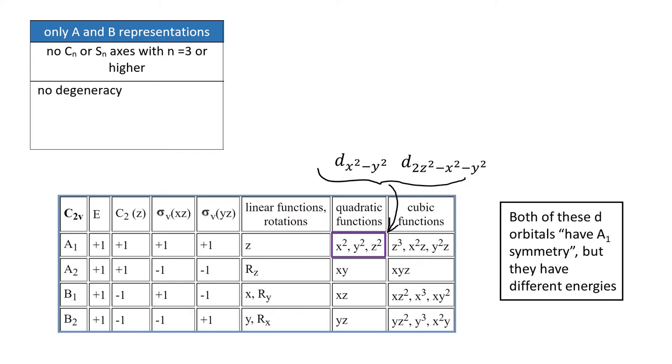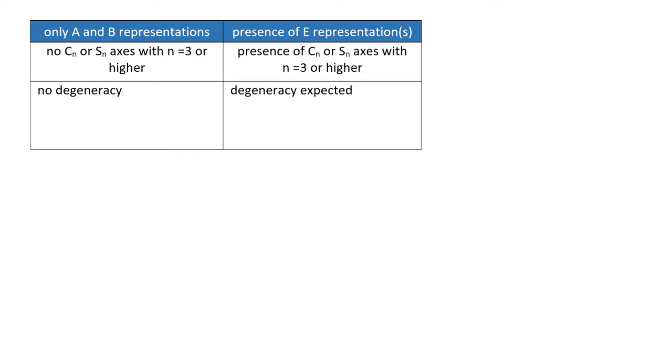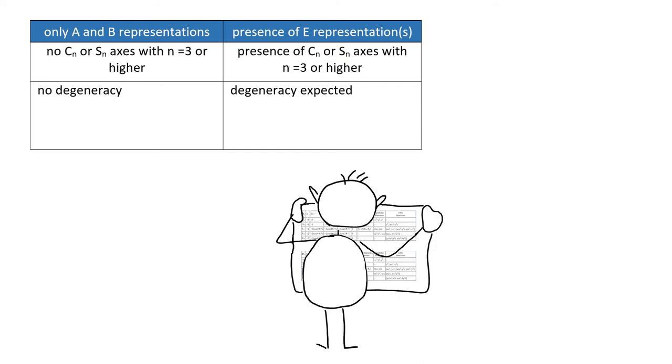So let's move on to E operations. As we said in a previous video, presence of Cn or Sn axis with n equals 3 or higher means that a group has E representations. In such cases, we might expect some degeneracy. You just need to check with the character table which E representation describes the orbitals that you are interested in.